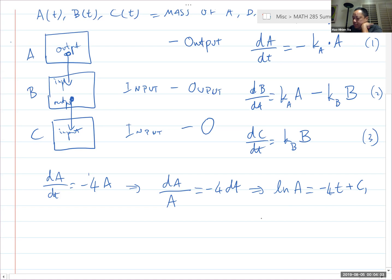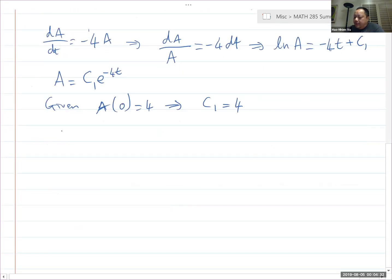Let's call it C_1. And so A is, I take exponential both sides. I end up with A is e^(-4t) times e^(C_1), which to me is just another constant. So C_1 in front like this. We're given the initial value of A. We're given that A(0) is equal to four. So C_1 is equal to four. And I have my A: A is 4e^(-4t). First answer.